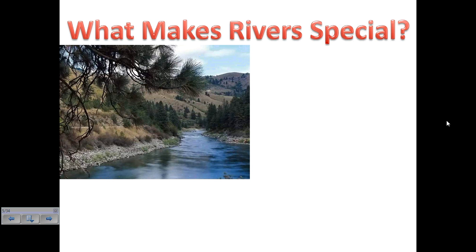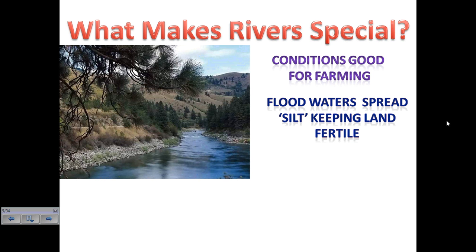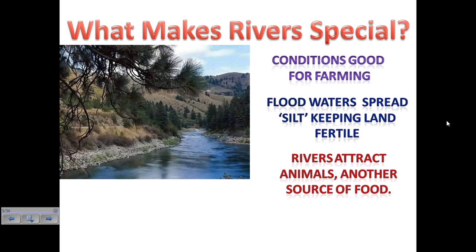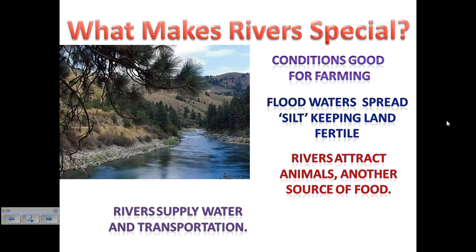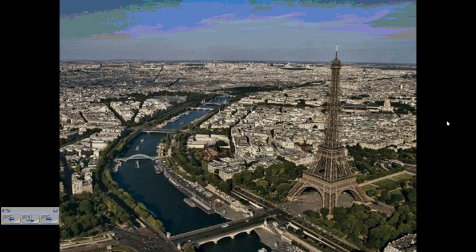Why are rivers so important? Rivers allow for civilization to develop — right along the river usually has good conditions for farming. During early time periods, floods were actually beneficial because they allowed silt to deposit along the river banks, keeping the land fertile. Rivers also attract animals, another great source of food, and they supply water and transportation. Even modern cities are established along rivers — for instance, Paris is on the Seine River, New York City on the Hudson River, Washington DC on the Potomac River, and London on the Thames River.